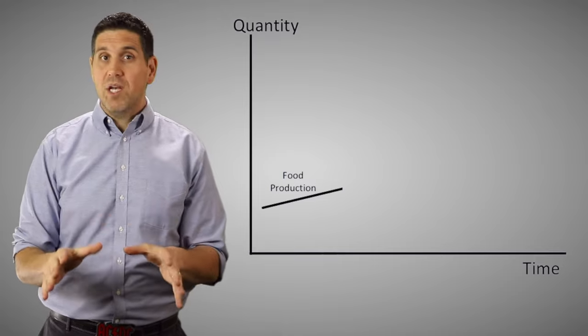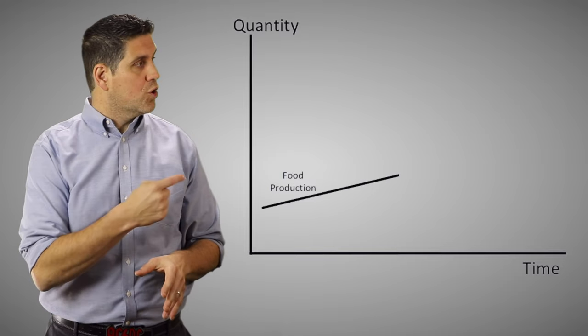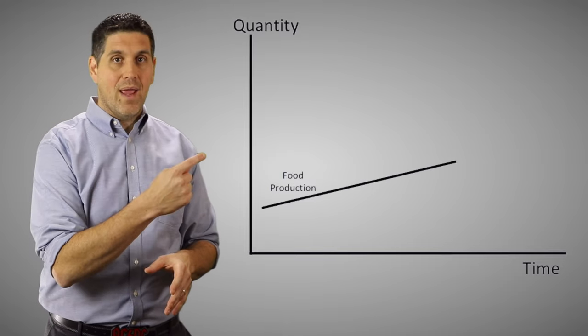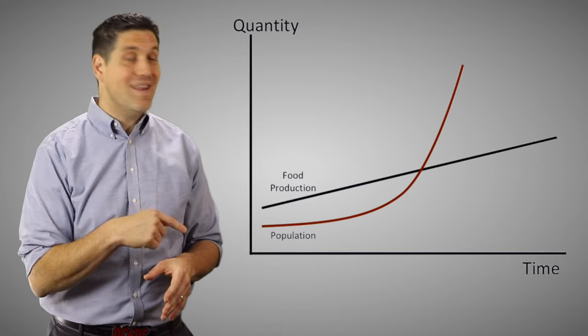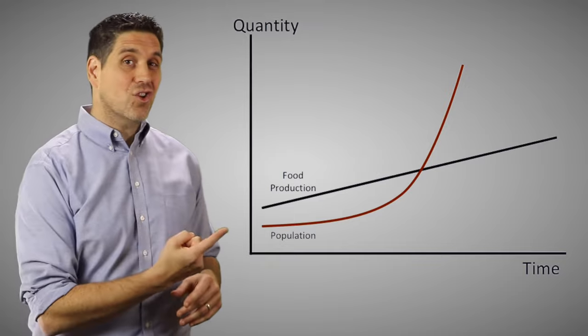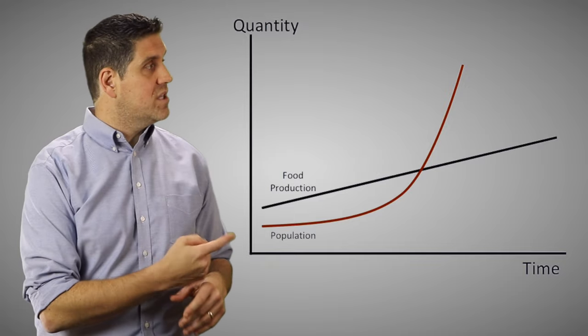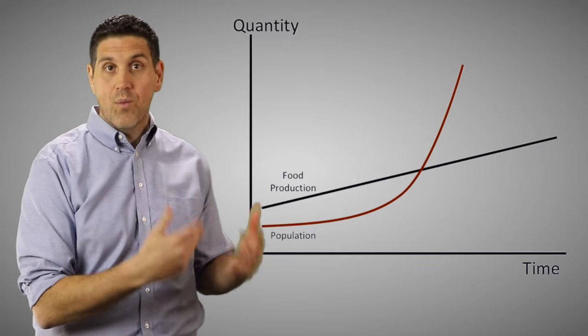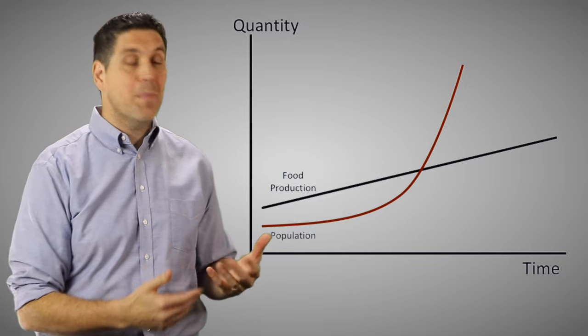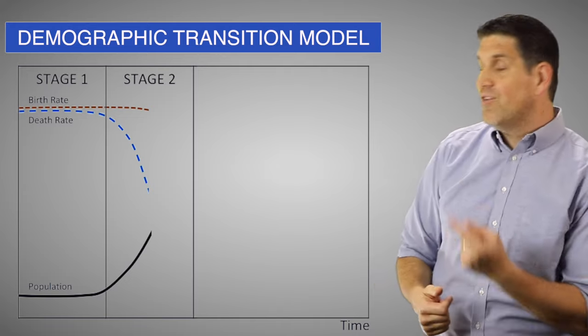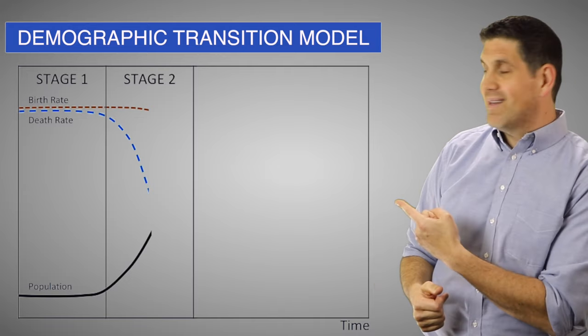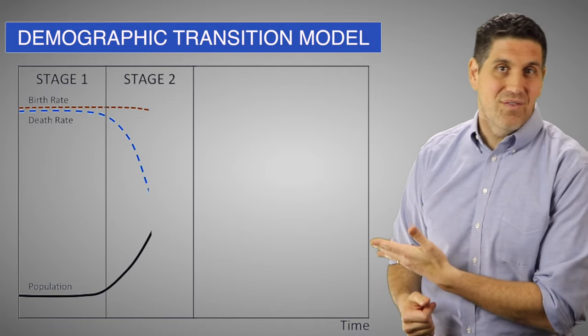Malthus noticed that our ability to produce food grew at a linear rate, but population grew exponentially. And his logical conclusion was that eventually we're going to run out of food and people are going to starve. And the DMT shows that he was right — kind of.